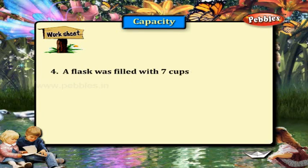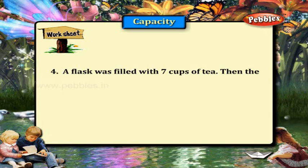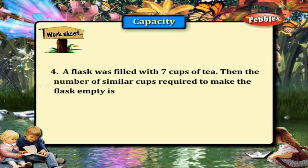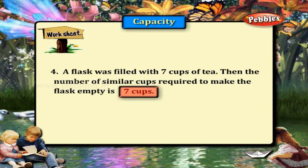A flask was filled with seven cups of tea. Then, the number of similar cups required to make the flask empty is seven cups.